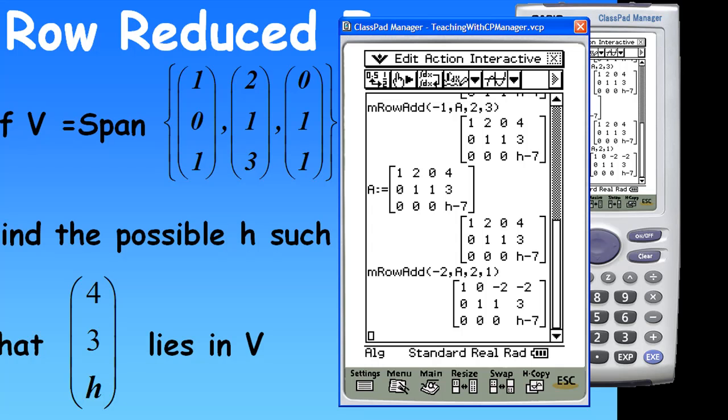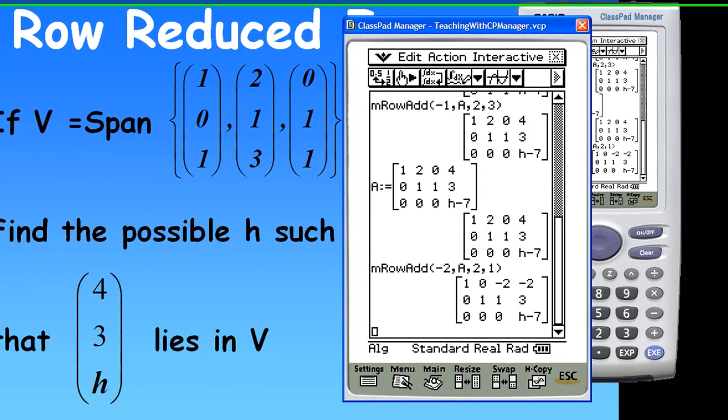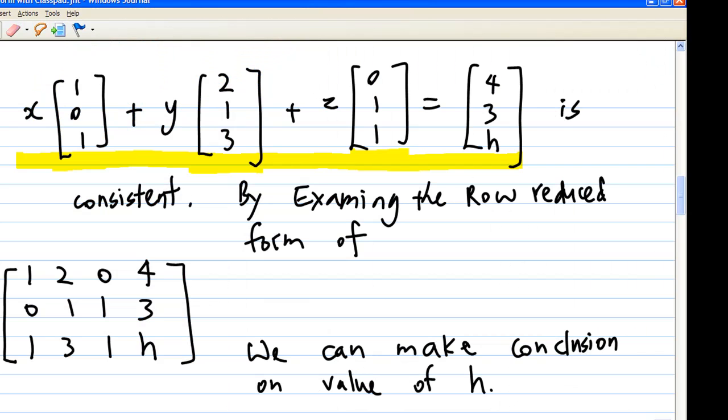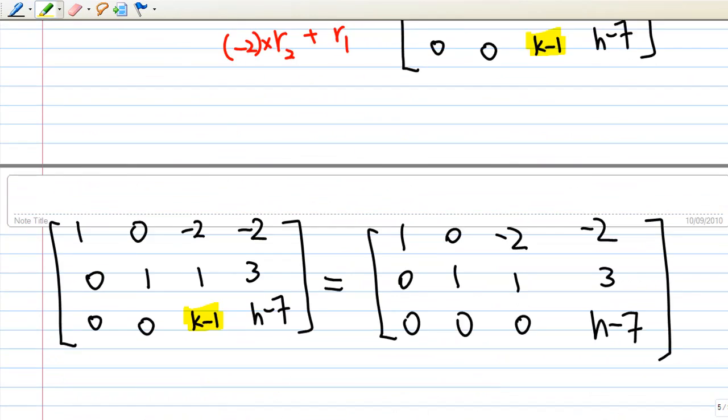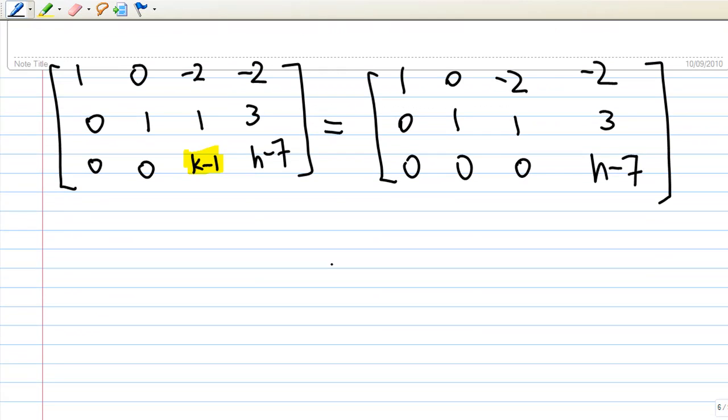So, now, let's look at the conclusion. So, by examining the row reduced form of this, we know that this is the row reduced form. So, H minus 7 is equal to 0 for system to be consistent system.